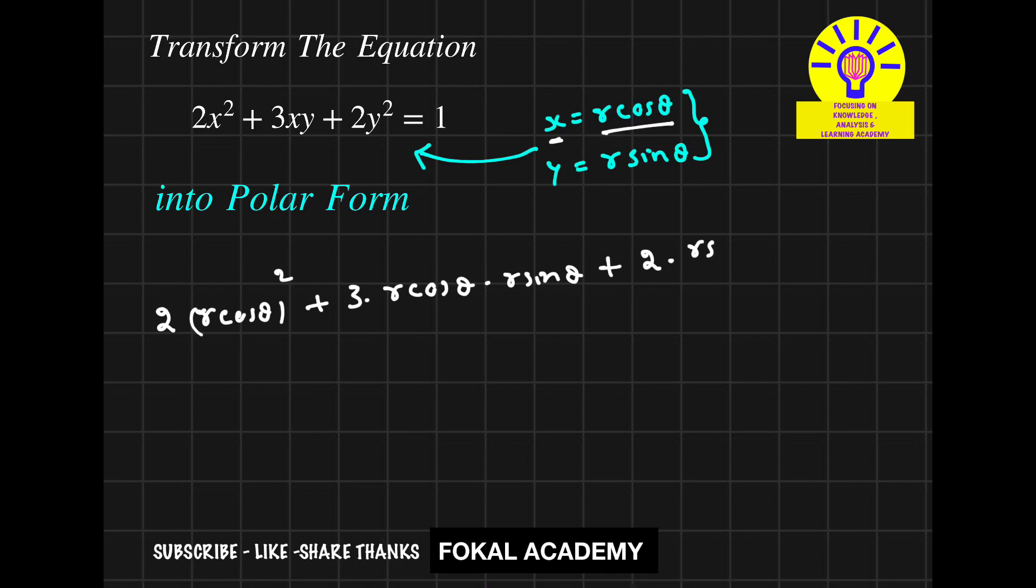By simplifying this, we'll get 2 into r square cos square θ plus 3 into r into r, r square sin θ into cos θ, plus 2 into r square into sin square θ equal to 1.